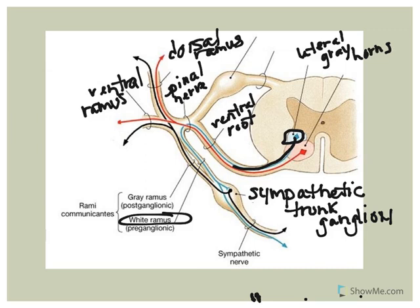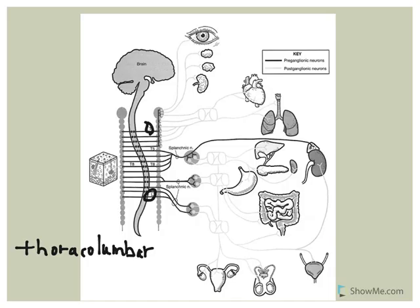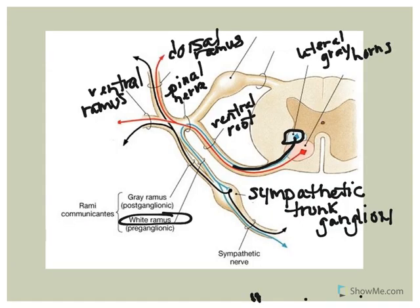The axons of post-ganglionic neurons are fairly long and unmyelinated. The ganglia are relatively close to the spinal cord, so the pre-ganglionic neurons are short, but in the sympathetic nervous system the effectors are pretty far away from these ganglia, making the post-ganglionic axons relatively long. These unmyelinated axons travel along the gray ramus communicans.